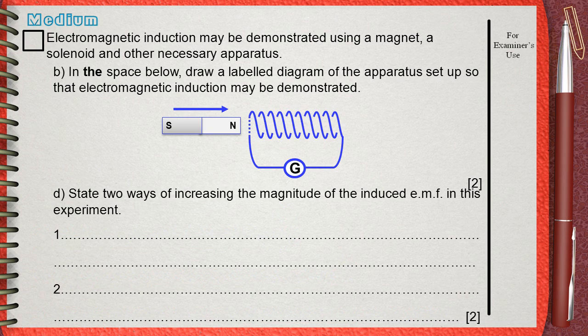Question D: A direct and simple question. State two ways of increasing the magnitude of the induced EMF in this experiment.